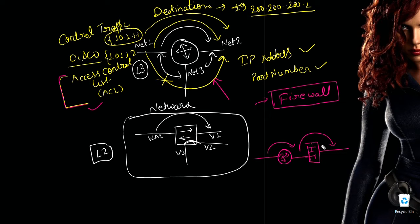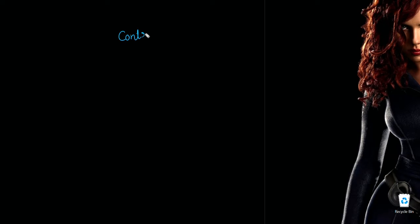Now the question comes: what exactly can a firewall do? The job of a firewall is to control traffic. Controlling traffic based only on IP address and port number is the concept of a legacy firewall.